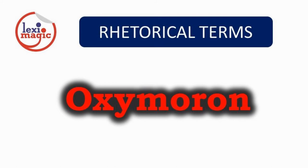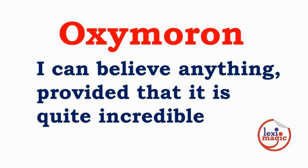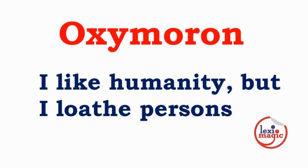An oxymoron consists of two terms where each term contradicts the other. 'Business ethics' and 'military intelligence' are comical oxymorons used by stand-up comedian George Carlin. Oscar Wilde: 'I can believe anything provided that it is quite incredible.' Samuel Goldwyn: 'Modern dancing is so old-fashioned.' Edna St. Vincent Millay: 'I like humanity but I love persons.'